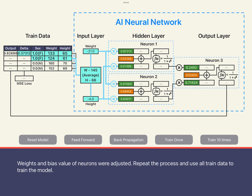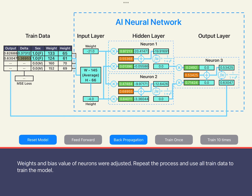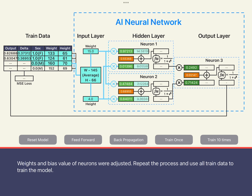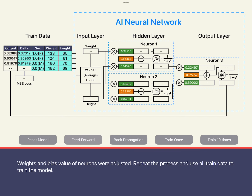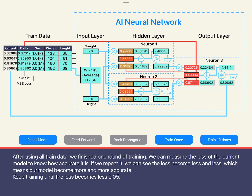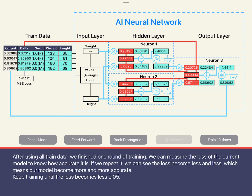We repeat this process until we complete training using all training data. At this time, we can evaluate the output results of the neural network to obtain the errors caused by the current parameters for all results. This value is still relatively high, but with each round of training this error is decreasing. Let's repeat the exercise until this error is less than 0.05.